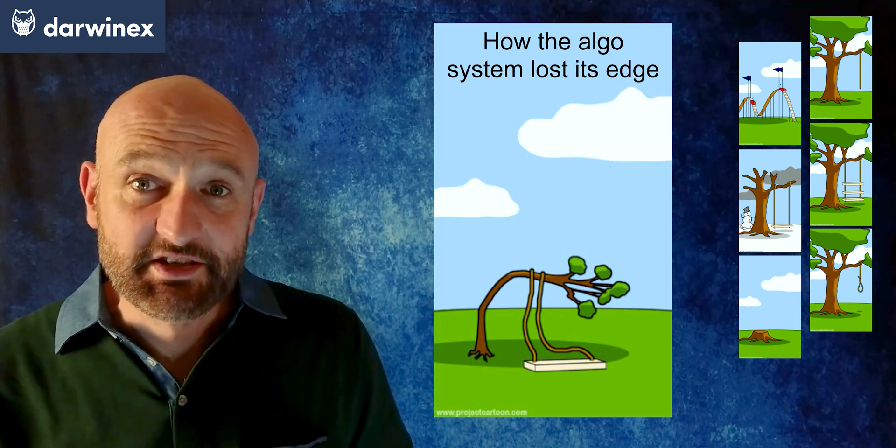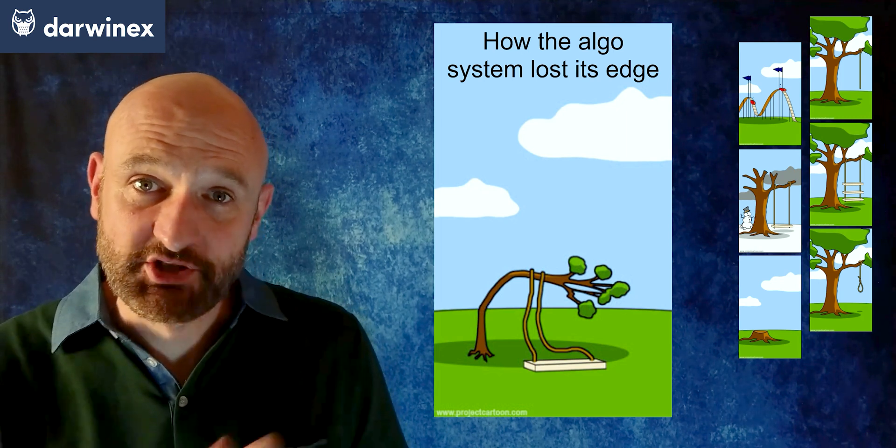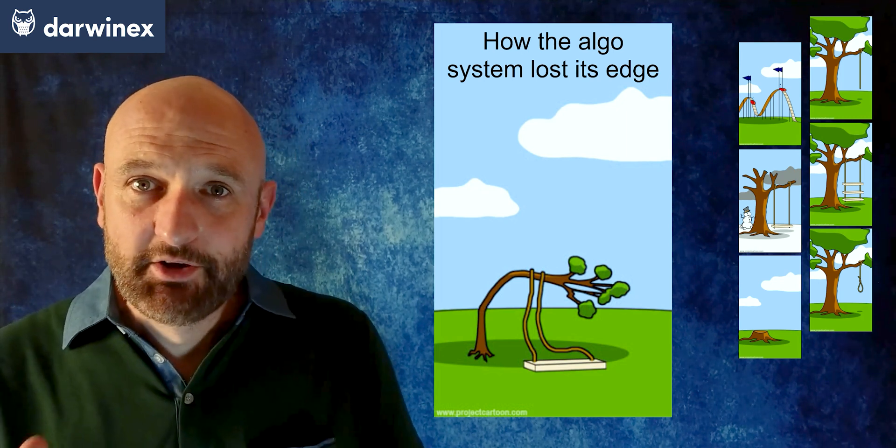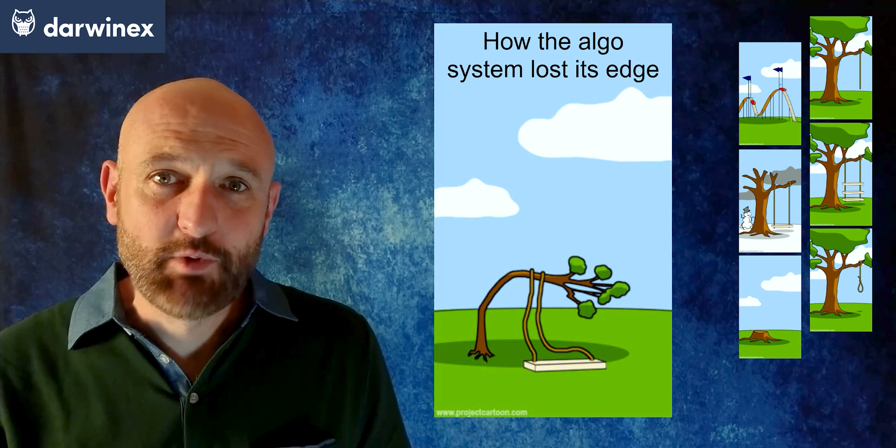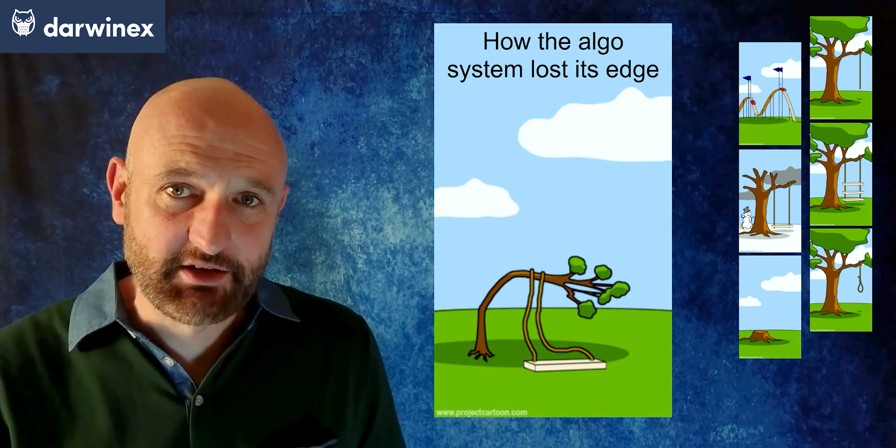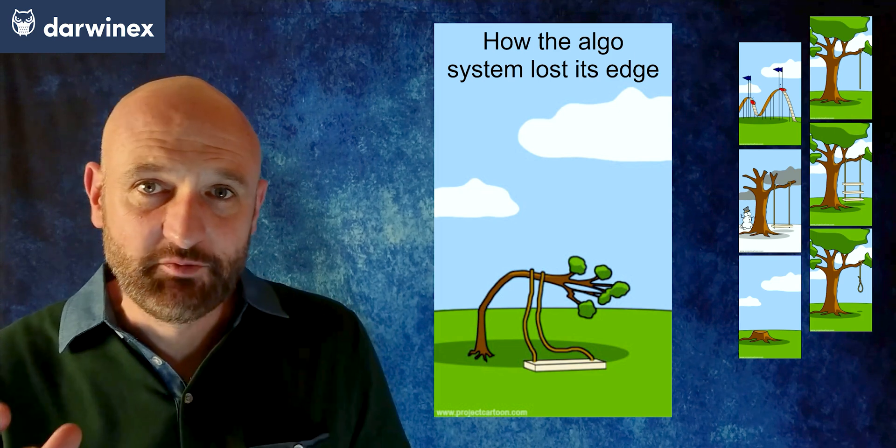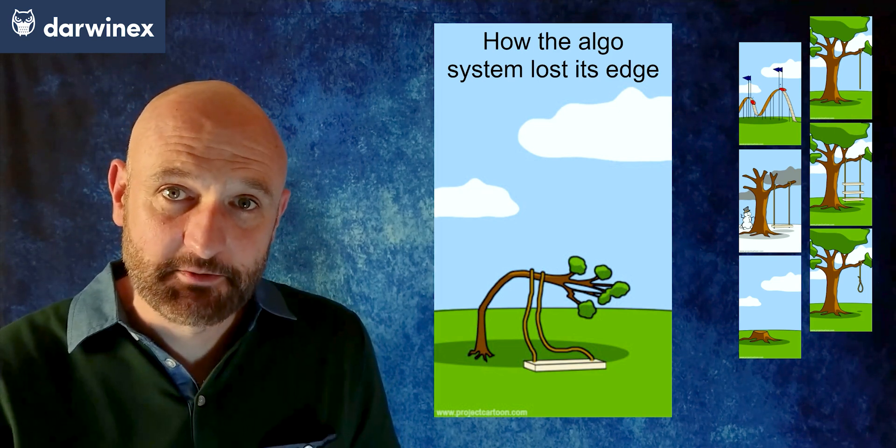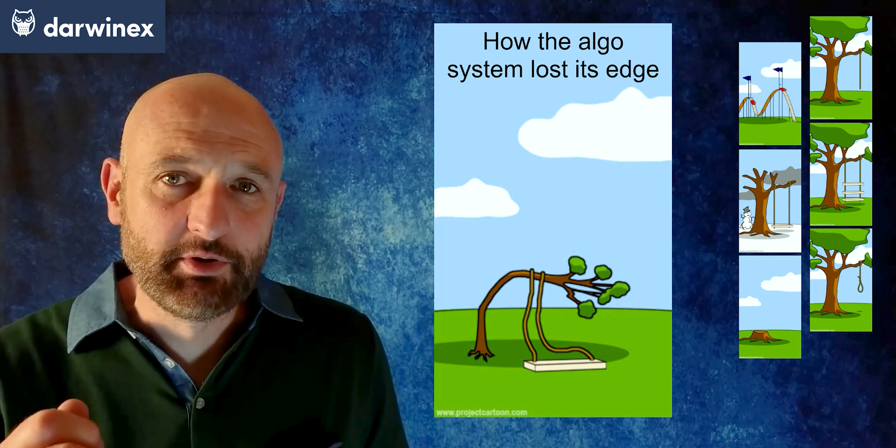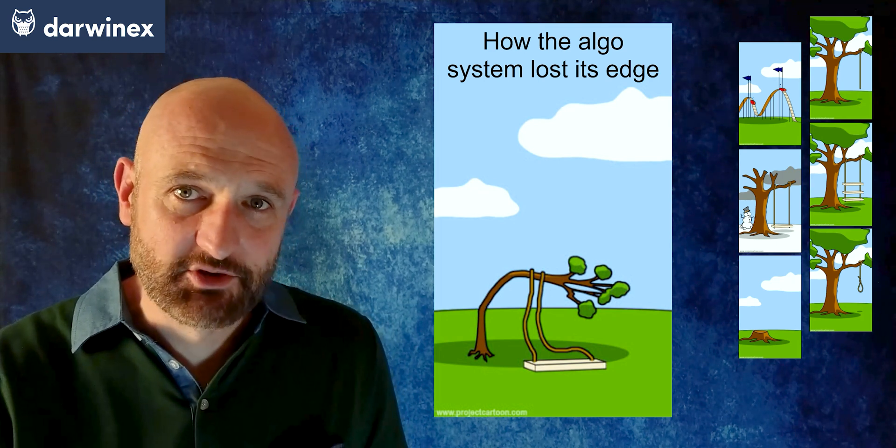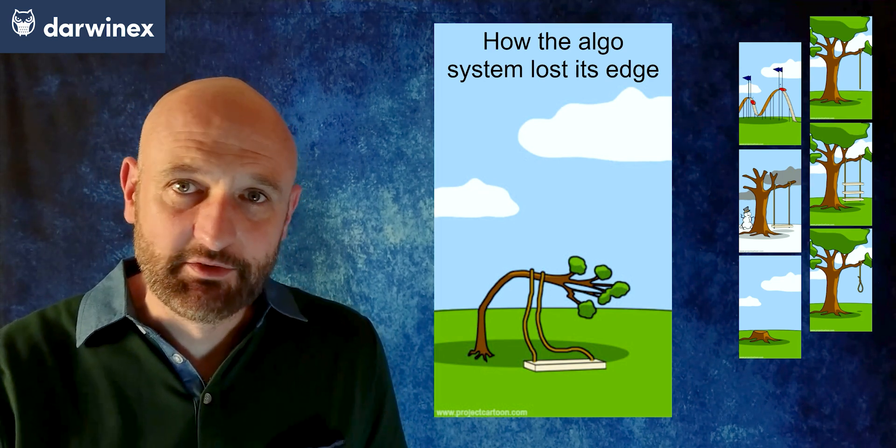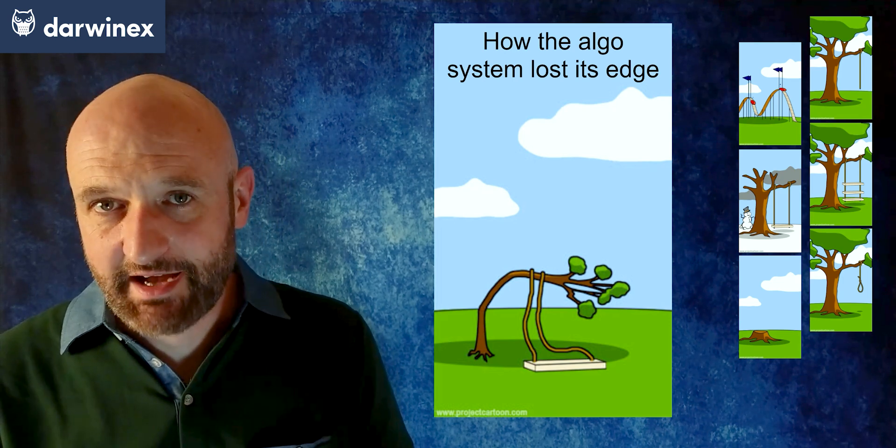So back to our main topic of a system losing its edge as you can see here. Another reason this can occur is when market dynamics change. In other words, the price action of the assets that you've been trading begin to change. And if you don't re-optimize your parameters to take account of those changes, your system will of course begin to lose its effectiveness.